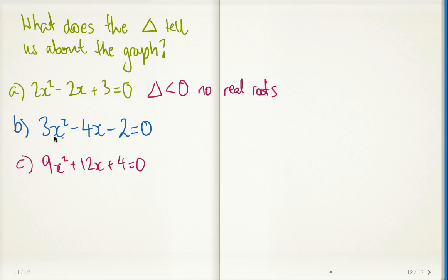We found the discriminant of this one here, this equation, to be 40, which was greater than 0, which means there should be two roots.